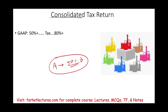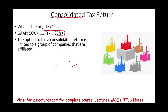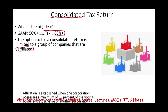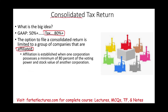When it comes to taxes, in order to consolidate a tax return, you have to own 80% or more. This is the big idea. It's an option to file — you don't have to file a consolidated return. The option is limited to affiliated groups of companies. Affiliation is established when one corporation has a minimum of 80% of the voting power and stock value of another corporation.